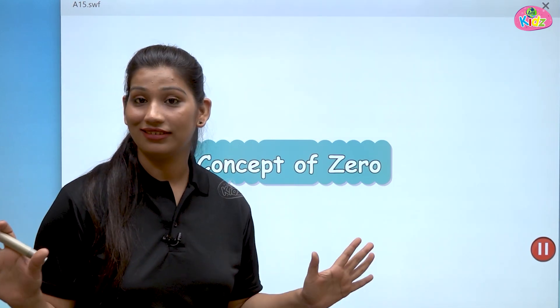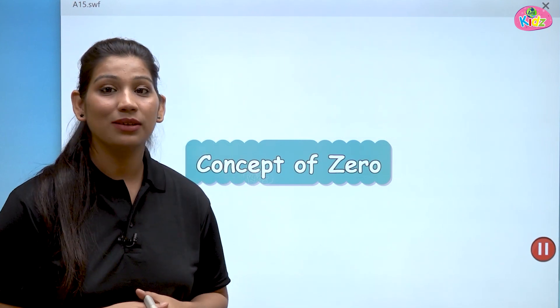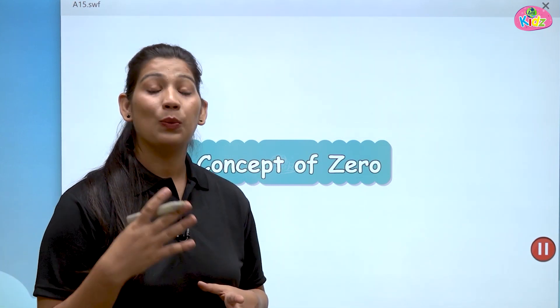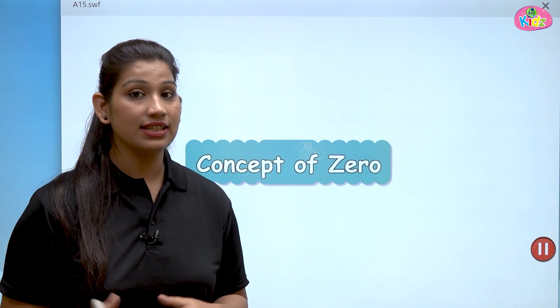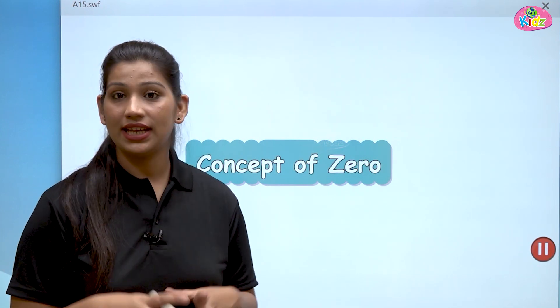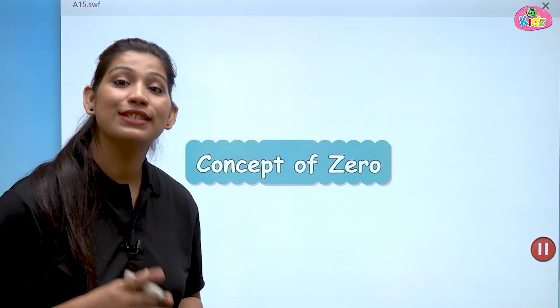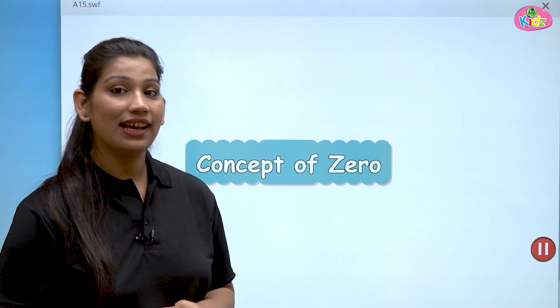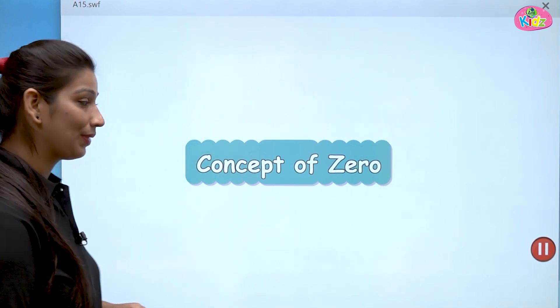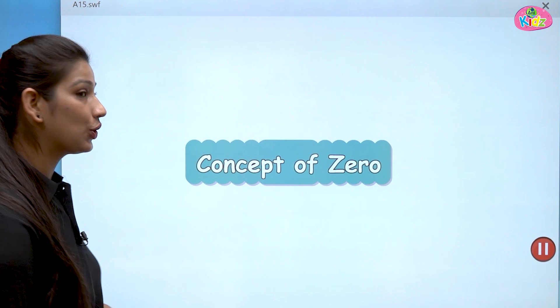Zero means none, nothing. Zero ka matlab hota hai kuch bhi nahi. When we do count the objects and we have no objects, then we say zero. Z-E-R-O, zero. Let us start understanding the concept.